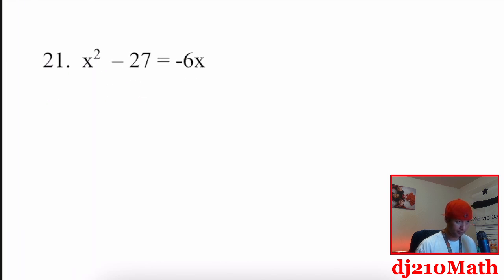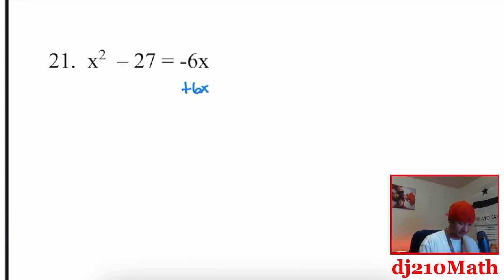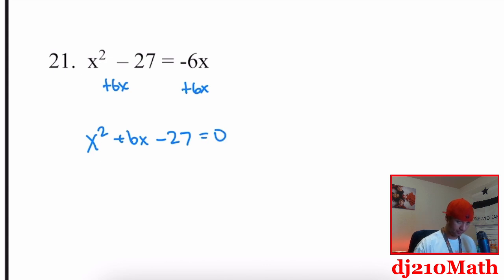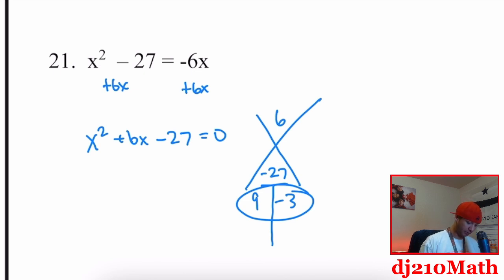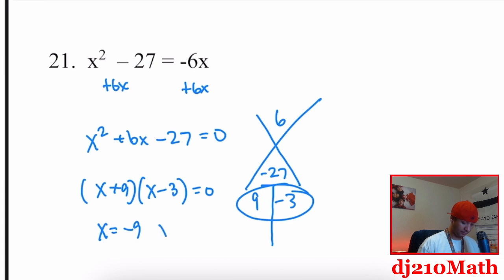Number 21: move everything to the left — add six X to get X squared plus six X minus 27 equals zero. Building the X puzzle: negative 27 and positive six. Factor pairs: nine and three, one of which must be negative. The big number gets the B sign, so negative three. Nine plus negative three is positive six and multiplies to negative 27. Factors: X plus nine times X minus three equals zero. Solutions: X equals negative nine and X equals positive three.